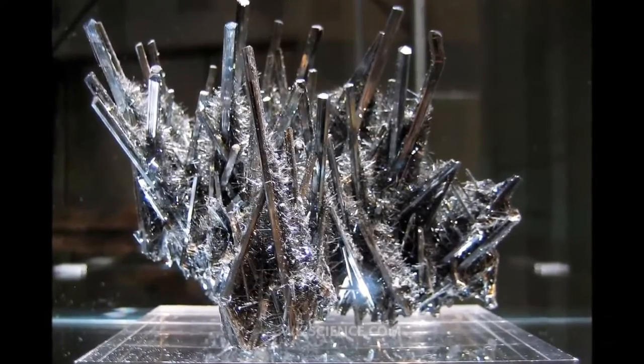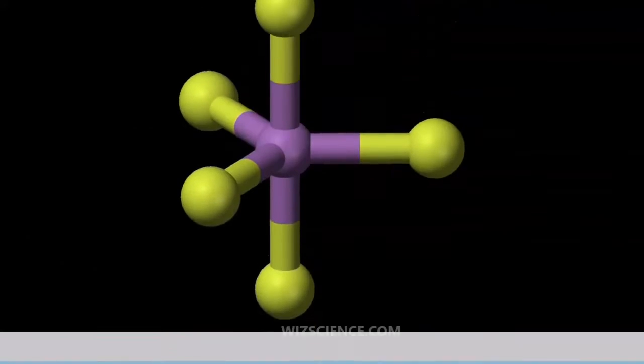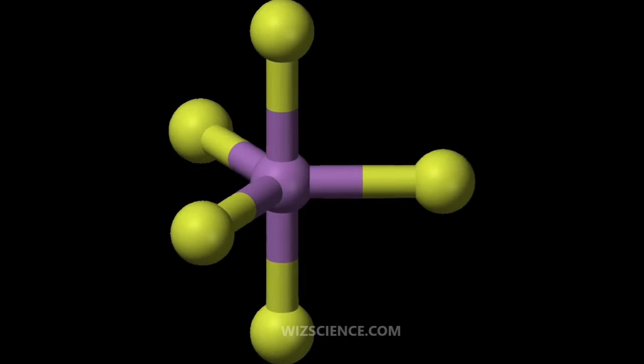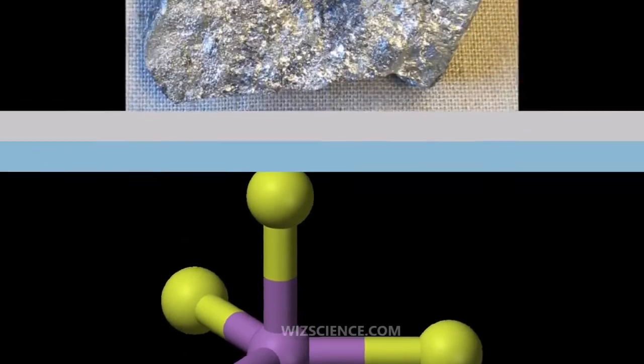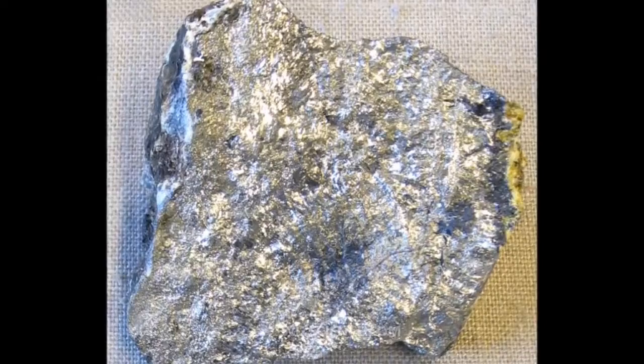The largest applications for metallic antimony are as alloying material for lead and tin, and for lead antimony plates in lead acid batteries. Alloying lead and tin with antimony improves the properties of the alloys which are used in solders, bullets, and plain bearings.